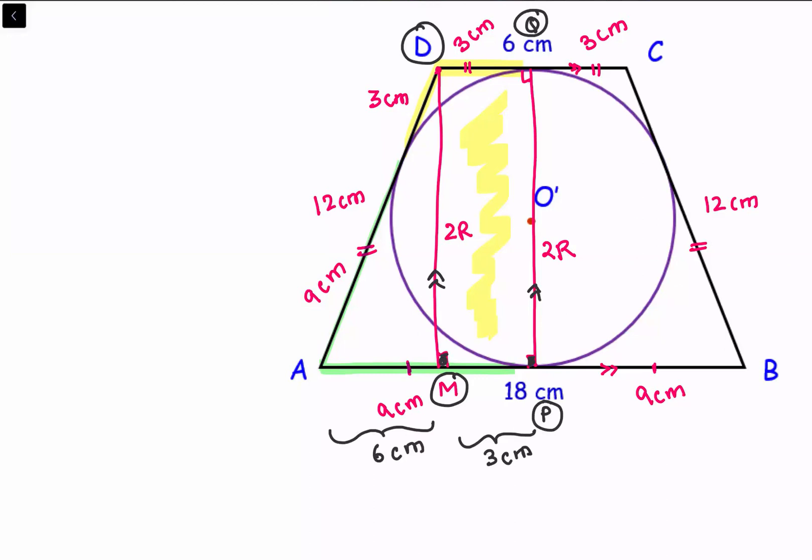Now we are looking at triangle AMD. If you look at triangle AMD, this is a right angle triangle and all the three sides are available with us. So applying Pythagorean theorem in triangle AMD.